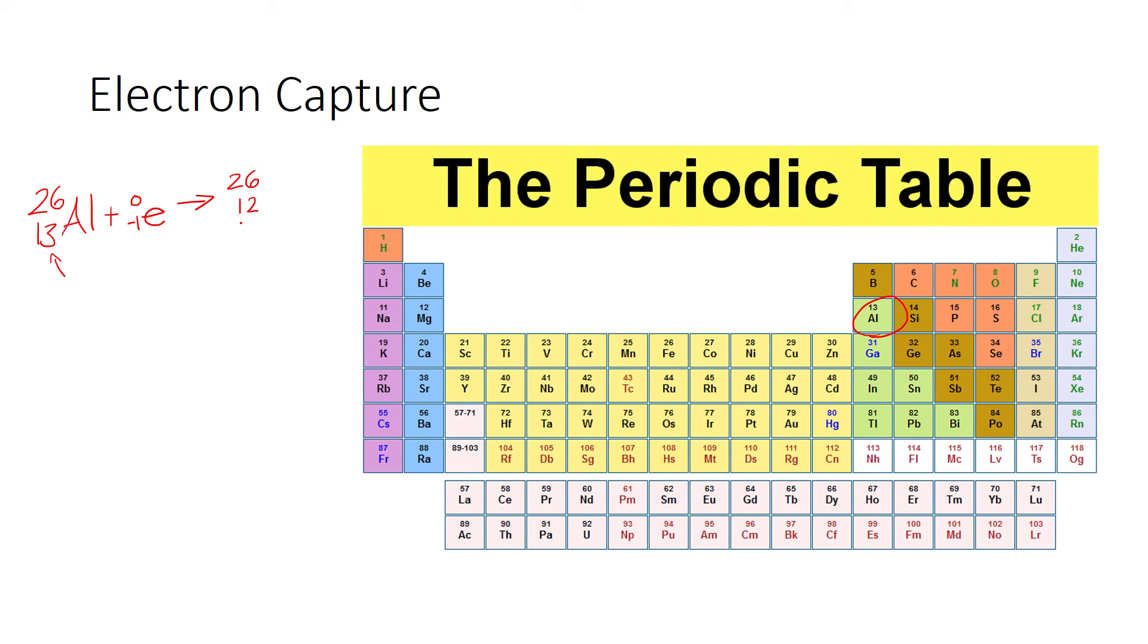And here, now that it has an atomic number of 12, we can see that this aluminum turned itself into a magnesium. So the parent nuclide becomes a magnesium. Here, the parent nuclide is aluminum 26 and the daughter nuclide becomes magnesium 26.